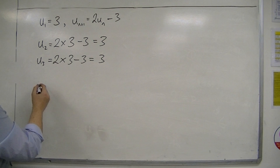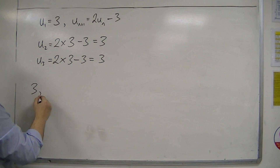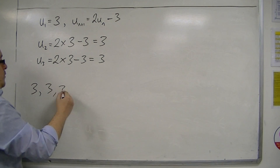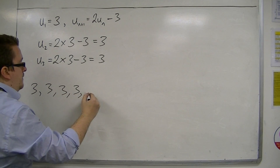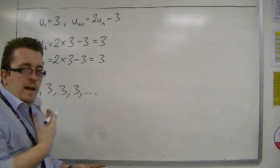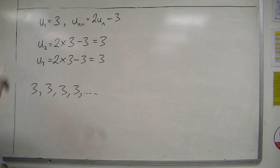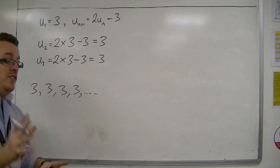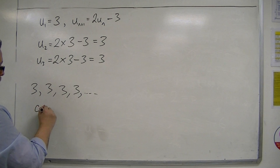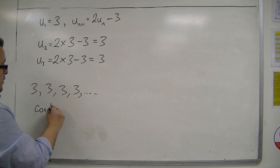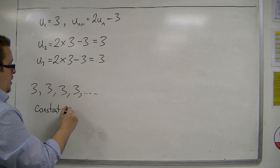This generates the sequence 3, 3, 3, 3, ... and on forever. So it generates what is known as a constant sequence — a sequence that is unchanging.